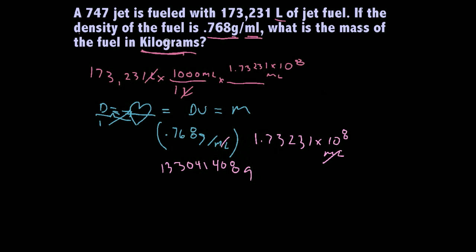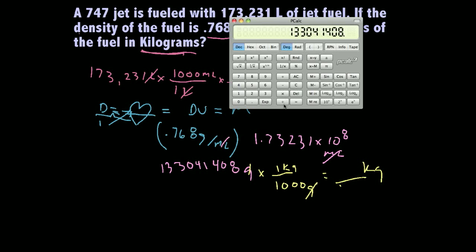Now, we just need to go to kilograms, right? Because the final problem asked for it, and they wanted it in kilograms. So, we need to give them the answer in kilograms. We know that for every one kilogram, I have 1,000 grams. My grams are going to cancel out. I'm going to be left with kilograms. Grab the calculator.